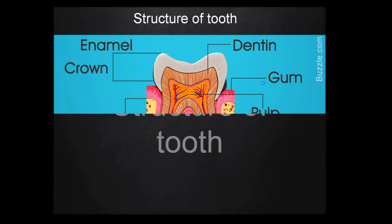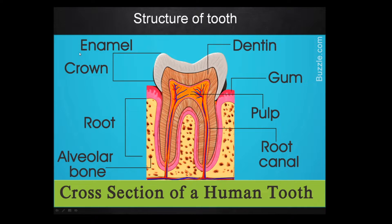A tooth has two parts: a crown and a root. The part we can see outside the gum is the crown, and the root is present inside the gum. The outermost white part of the tooth is known as enamel, which is the hardest substance in our body.